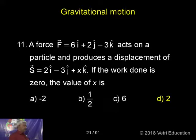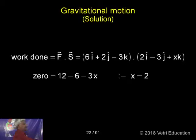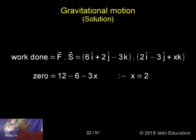We have to find the dot product: 6 into 2 is 12, minus 6, plus minus 3k. Setting 3x equal to 0, from which x can be calculated — keeping 3x, we get 3x equal to 12, so x is equal to 4. This is also shown in a detailed view.